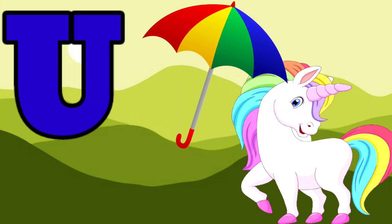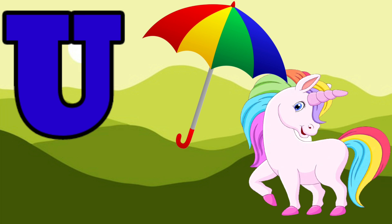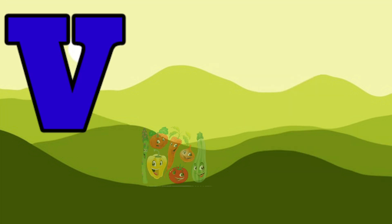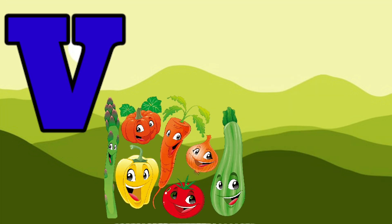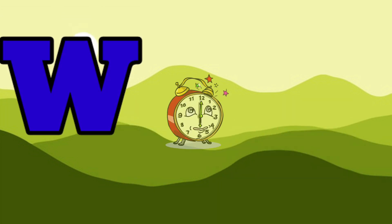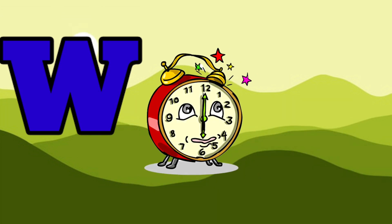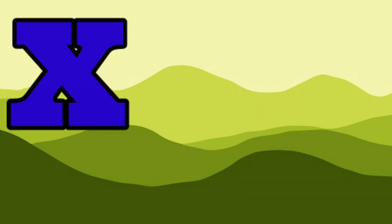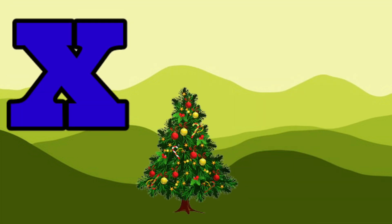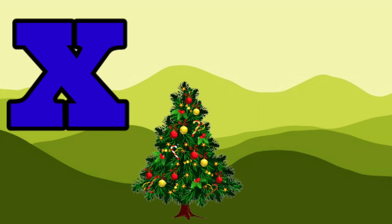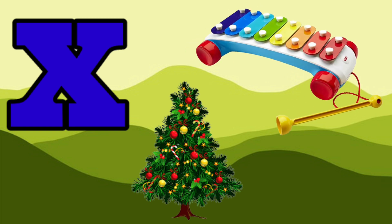U for umbrella, U for unicorn, V for visitable, V for van, W for watch, W for whale, X for eagle, X for x mystery, X for telephone.